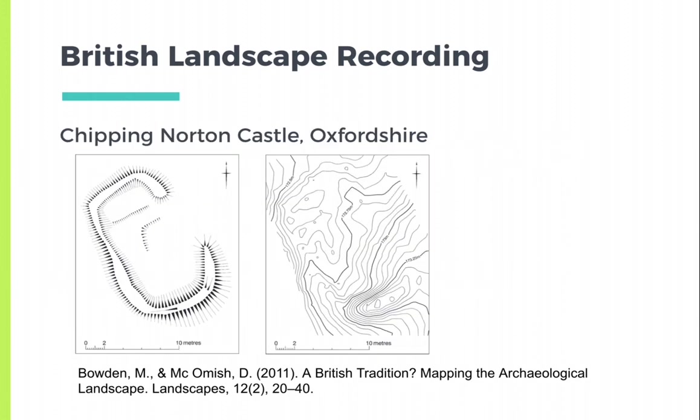On the left is a hashered plan of a building in the bailey of Chippy Norton Castle. The hashered plan brings out more detail and renders the structure comprehensible. The underlying ground surface is relatively level. On the right is a contour plan, which gives a general impression of the most substantial part of the earthwork, but does not show the full extent.